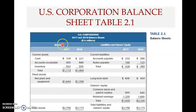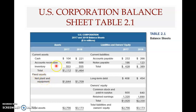Looking at the assets portion first: assets are organized in descending order of liquidity. So you have the most liquid assets at the top — which is cash — and the least liquid assets at the bottom, which would be net plant and equipment, or fixed assets generally. We start with the most liquid asset, which is cash itself.